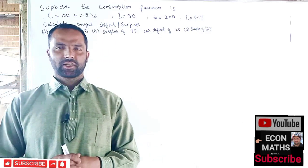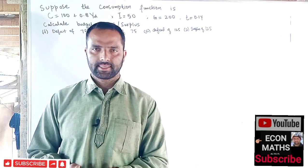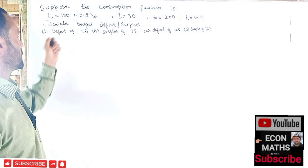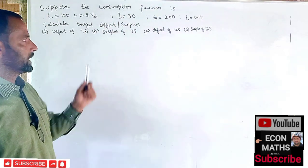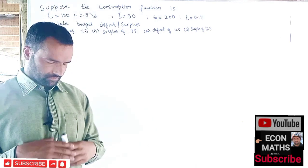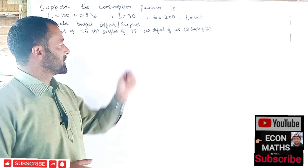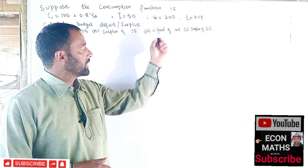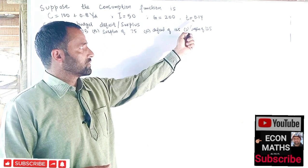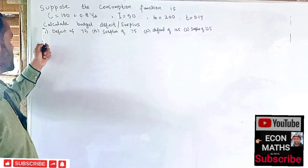Hi, this is Halal. In this video on the mathematical economics series, we will solve a numerical that was offered in an examination recently. The question is: suppose the consumption function is given as C = 100 + 0.8 Y_d, where C is consumption and Y_d denotes disposable income. Investment is given as 50 (autonomous investment) and government expenditure is given as 200, and the tax rate is given as T = 0.1Y.